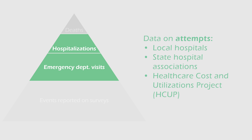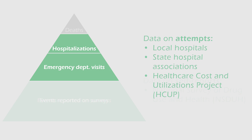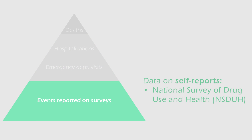For many states, although not all, there is information available in the HCUP data. There are also databases like the National Survey on Drug Use and Health and the Youth Risk Behavior Survey, which covers high school students — sources through which communities can sometimes obtain this kind of information.